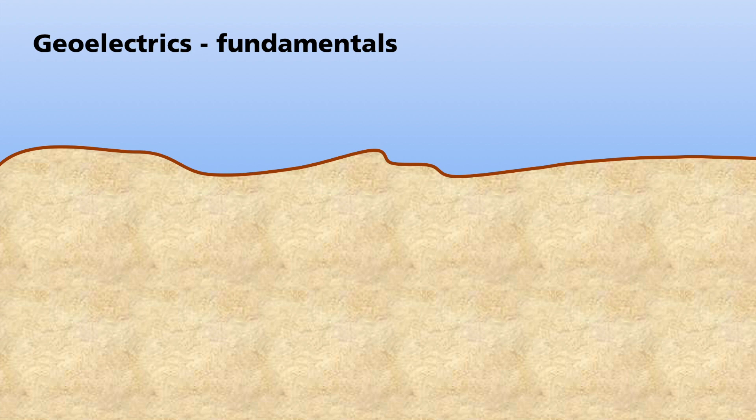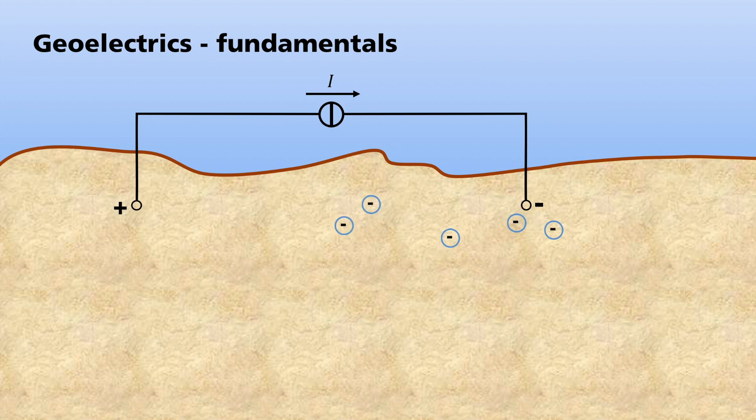The basic approach of geoelectrics is to supply a current into the earth so that the electrical conductivity of the subsurface can be studied. A material is conductive if it contains free charge carriers that allow charge to be transported. Under these conditions, then a current can flow. In metallic conductors, the charge carriers are electrons. In rocks, however, charge transport occurs mainly through free ions, sometimes dissolved in water.